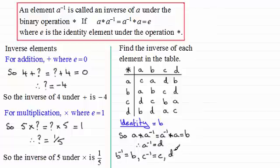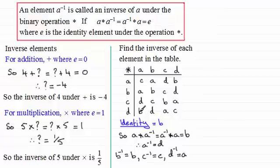Lastly, the inverse of D. What do we combine D with to give us B? Looking at the table you can see that it is A. D combined with A gives B, and A combined with D gives B. So that's an example of finding the inverse elements from a table.